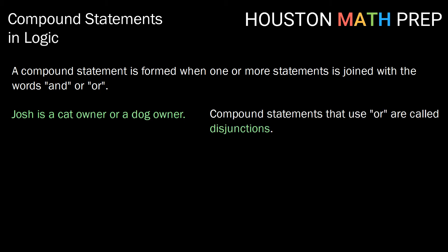Compound statements that use or are called disjunctions. We use the symbol P or Q shown here. So it's just the flip of our previous symbol.